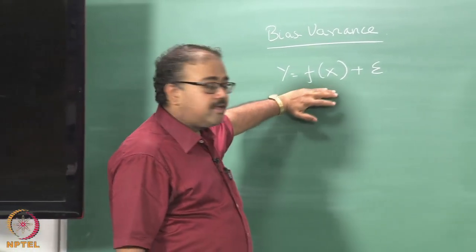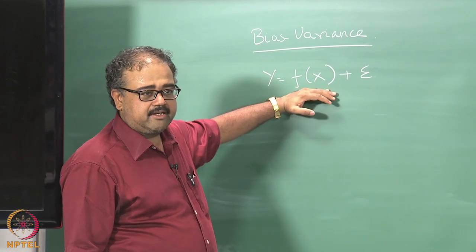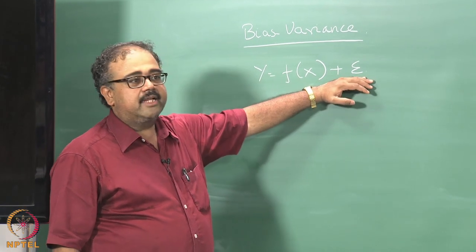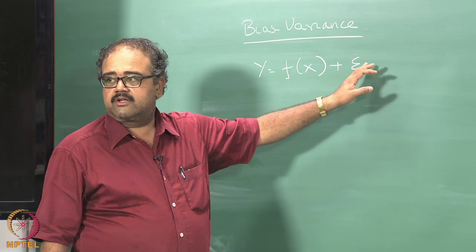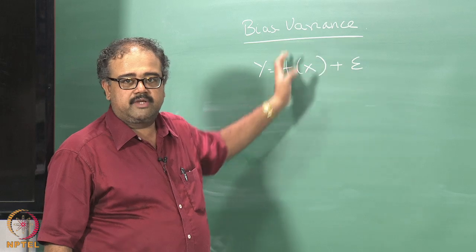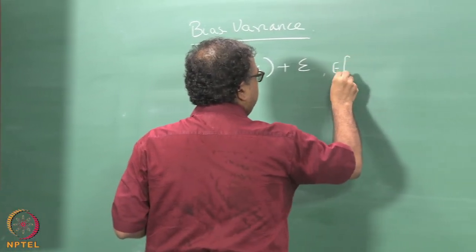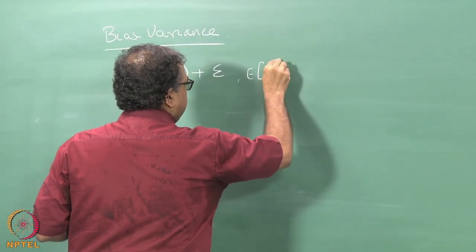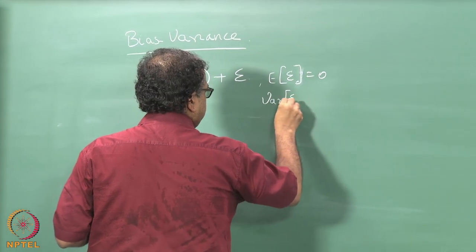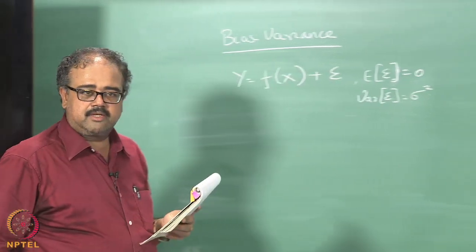Here we are making a specific assumption about the form of the joint distribution. I am assuming that there is some kind of an underlying deterministic function f which is operating on my input X, but then it is corrupted by some stochastic noise which we will call epsilon, and that gives me the joint distribution over X and Y. We are going to assume that the expected value of epsilon is 0 and the variance of epsilon is some sigma squared.